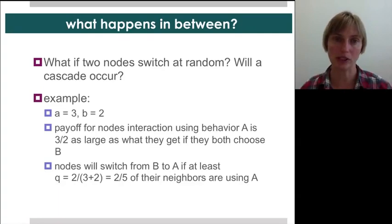But what happens in between, right? You have these equilibria, which is that everyone's just doing one thing. But what if for some reason you had two of the nodes switch? There could be some external reason. So let's see a particular example.